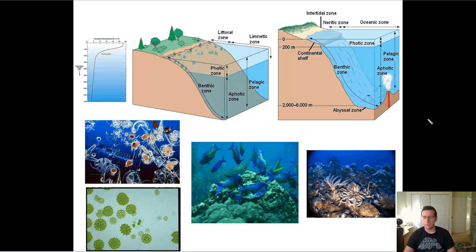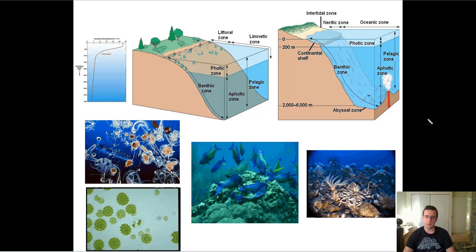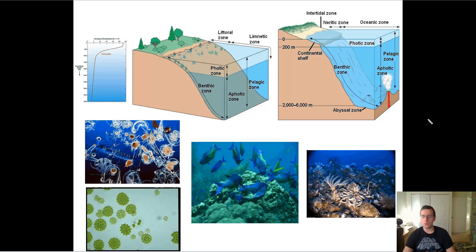Before we talk about them, I wanted to introduce the idea of aquatic zonation, or the idea that the ocean is divided into areas. Remember that the major limiting factor in the ocean is going to be the amount of sunlight that the water receives. As it gets deeper and deeper, it's going to get to the point that no sunlight gets down there. So the beginning is going to have a lot of production, a lot of algae growing, because there's a lot of sun.